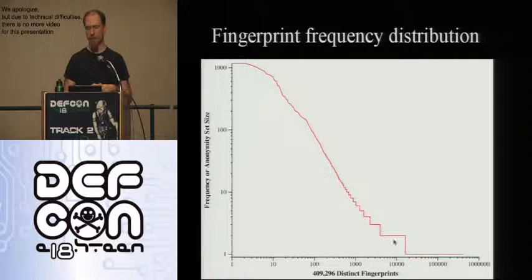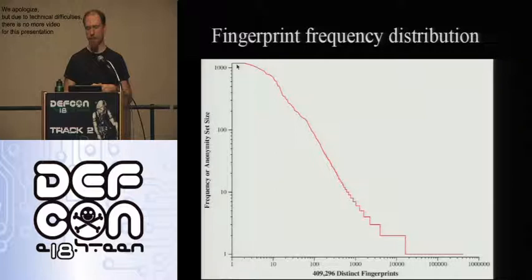There's another group of about 20,000 people with an anonymity set size of 2, and small groups with 3, 4, 5, and then right at the other end, a small number of fingerprints that were not very unique. The one at the top is a Firefox instance not running JavaScript — a recent Firefox with no JavaScript gives you a decent amount of anonymity.